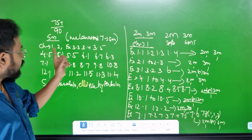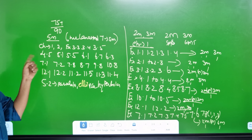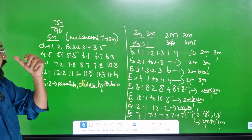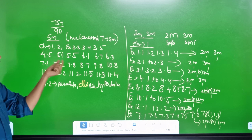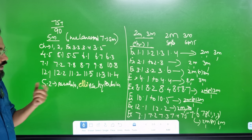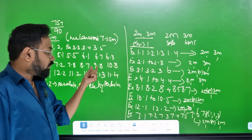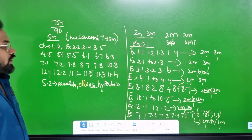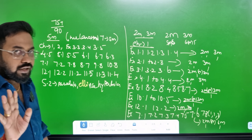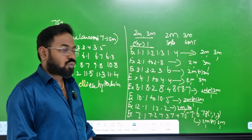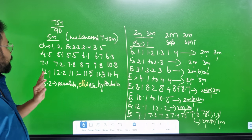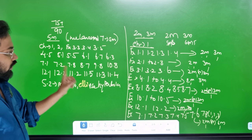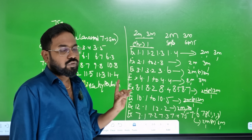Chapter 3: sections 3.3, 3.4, 3.5, 4.5, 5.1, 5.5, 6.1, 6.7, 6.3. Chapter 7: 7.1, 7.2, 7.8. Chapter 8: 8.0 is correct. Chapter 9: 9.8 is correct. The area sections are correct. Section 10.8 is correct. 12.1 is correct, 11.2, 11.5, 11.3, 11.4.